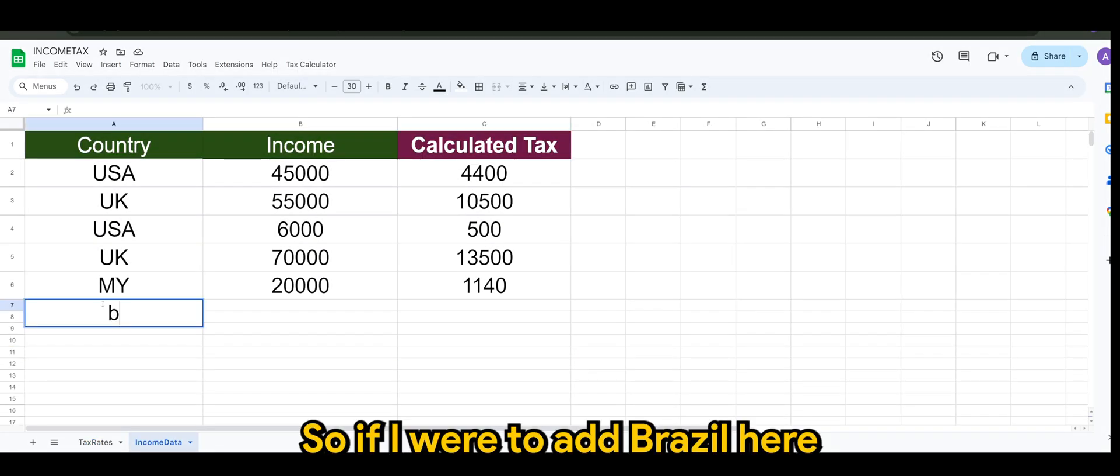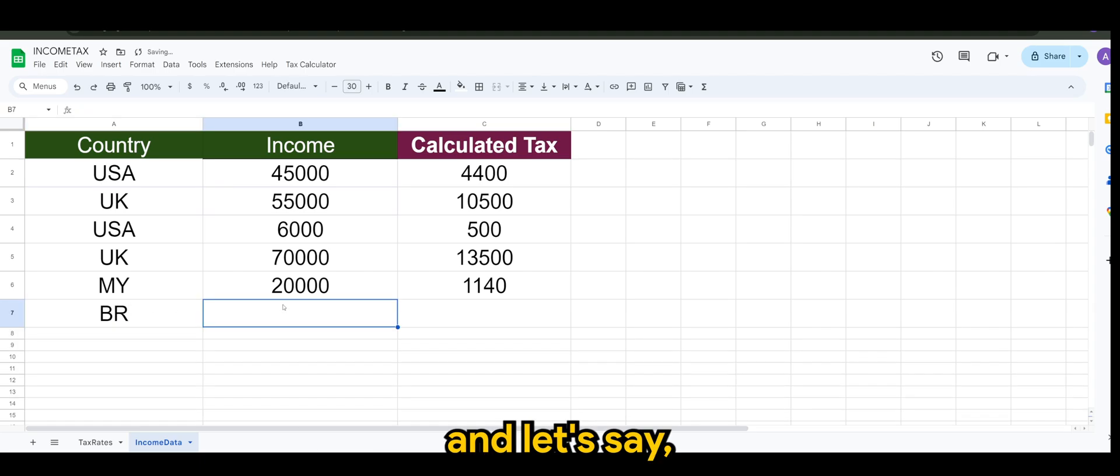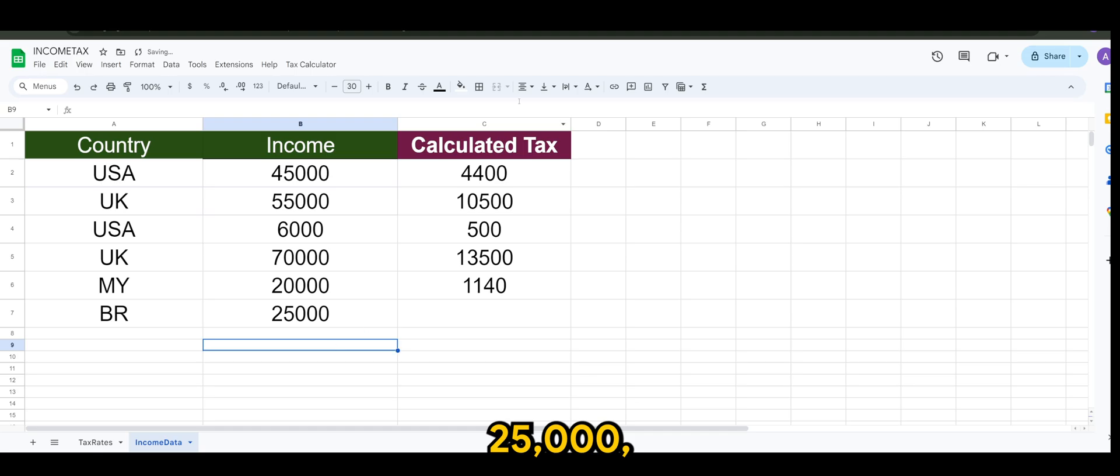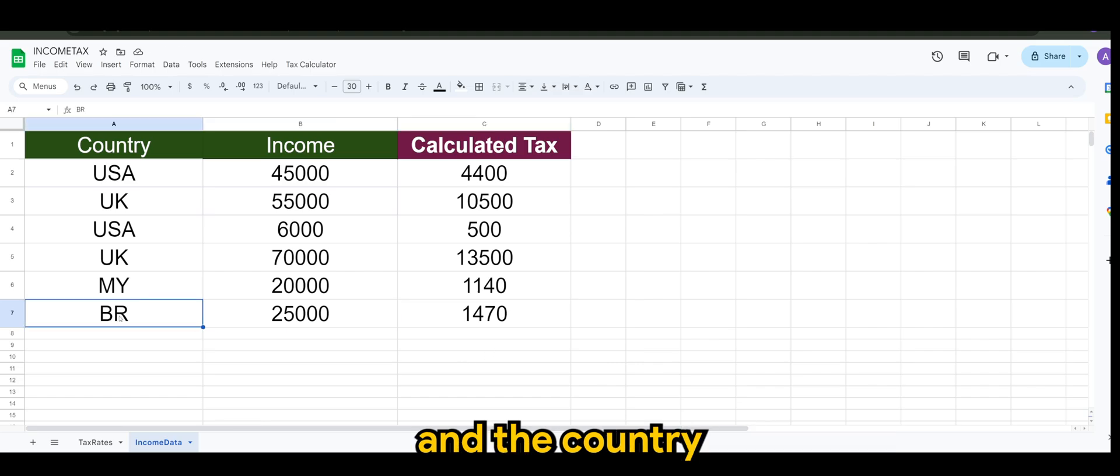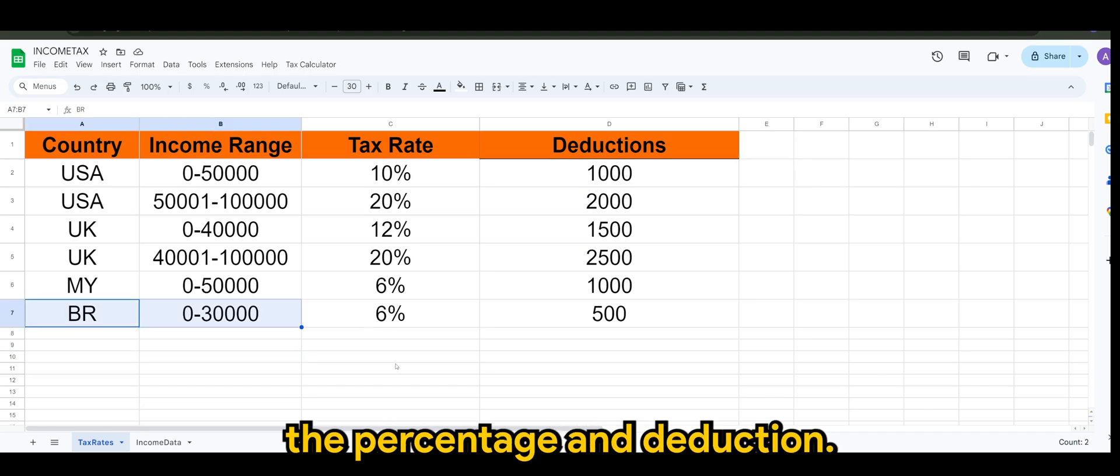If I were to add Brazil here, and let's say 25,000, and I calculate the tax, it will update as well. So you can see, based on the income and the country, which will refer back here, it will take the percentage and deduction.